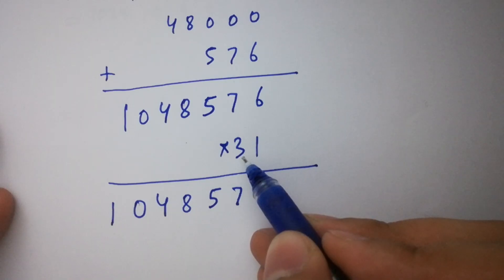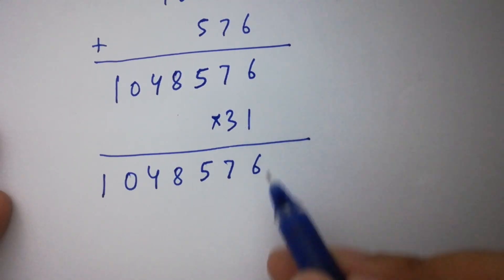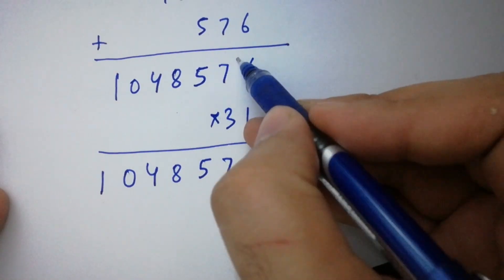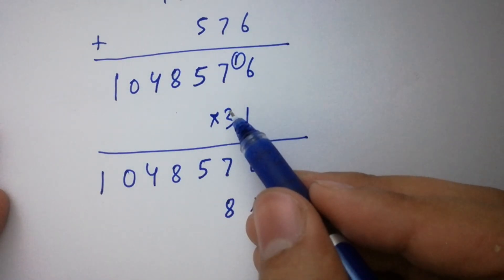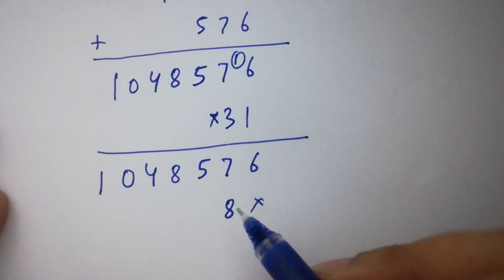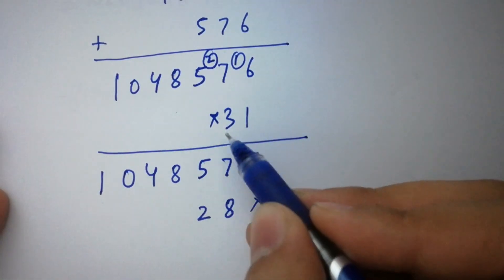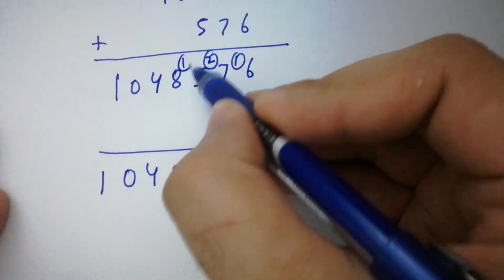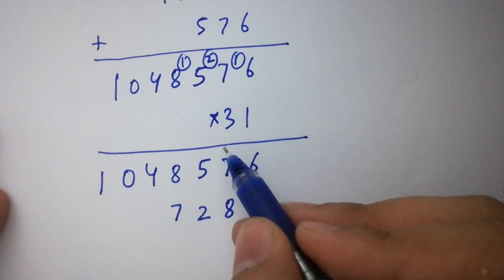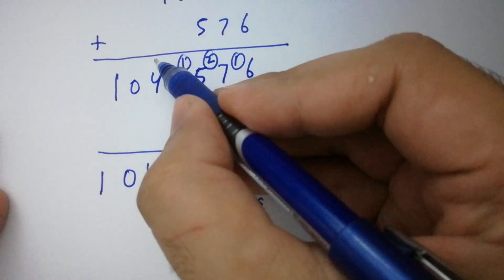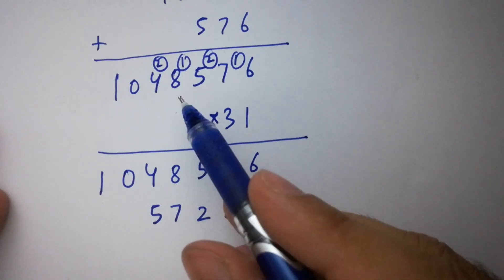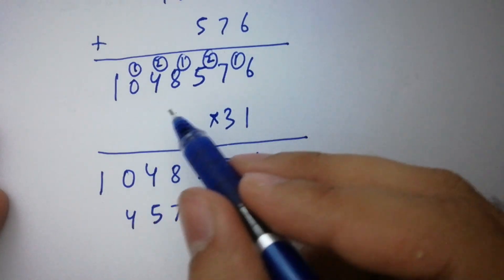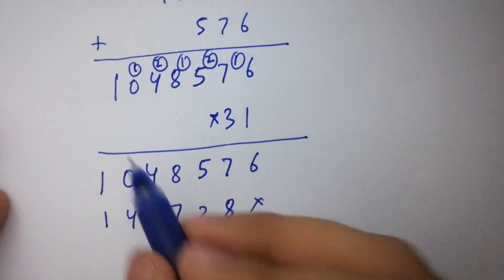Now multiplying 1,048,576 by 3 (the tens digit of 31): 3 times 6 is 18, write 8 carry 1. 3 times 7 is 21, plus 1 carry is 22, write 2 carry 2. 3 times 5 is 15, plus 2 is 17, write 7 carry 1. 3 times 8 is 24, plus 1 is 25, write 5 carry 2. 3 times 4 is 12, plus 2 is 14, write 4 carry 1. 3 times 0 is 0, plus 1 is 1. 3 times 1 is 3. Second partial product: 3,145,728.